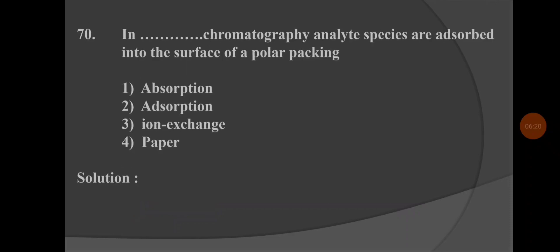Last question: In which chromatography are analyte species adsorbed onto the surface of a polar packing? Option 1: absorption, option 2: adsorption chromatography, option 3: ion exchange chromatography, option 4: paper chromatography. The correct answer is option 2: adsorption chromatography. Thank you for watching.